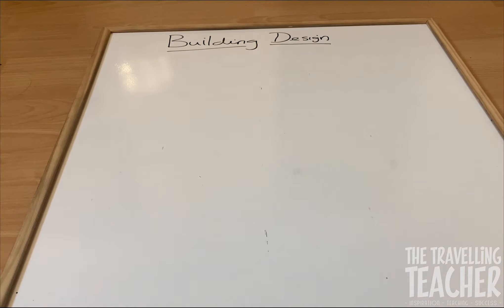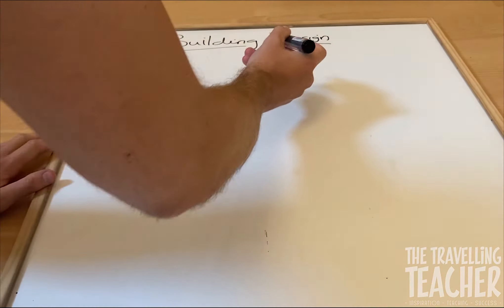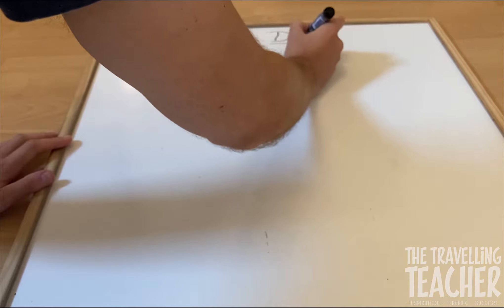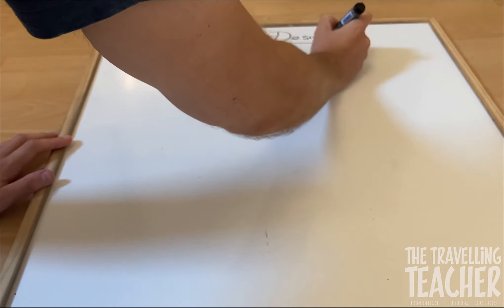Hi everyone and welcome to this really quick video which can be used for AQA GCSE Geography. What we're going to look at today is building design and how building design can be used to reduce the impacts of earthquakes.